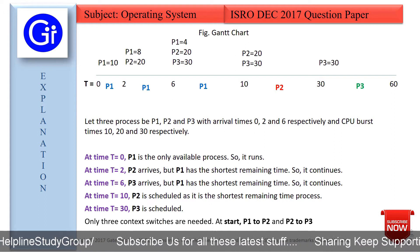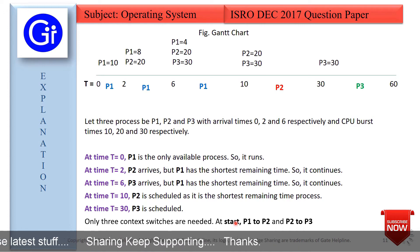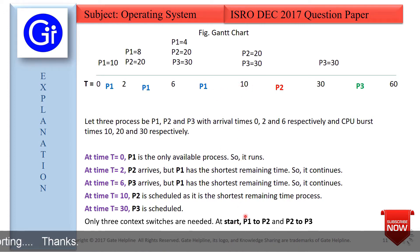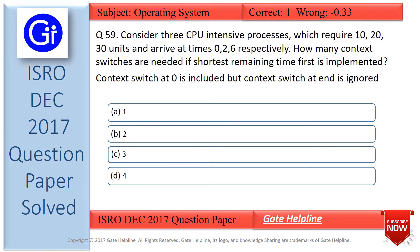As per our discussion, only three context switches are needed: the first at the start (t=0), the second at t=10 from P1 to P2, and the last at t=30 from P2 to P3. The answer to this question is option C — 3 are the number of context switches needed if Shortest Remaining Time First is implemented, with the context switch at t=0 included.